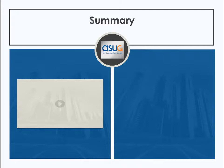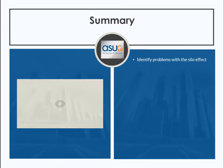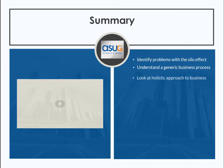In summary, this module topic introduced key concepts related to a typical functional structure. We also looked at the problems associated with the silo effect. We examined a generic business process and understood the importance of having a trigger, coordinated functional areas, and a successful outcome. Finally, we looked at the holistic approach to business and the importance of viewing the business process from end to end, rather than focusing on just a single functional area.